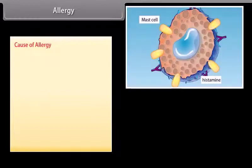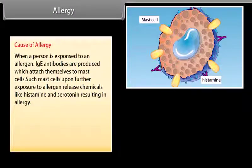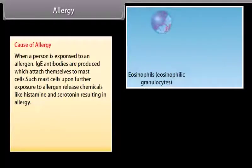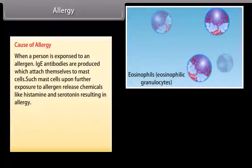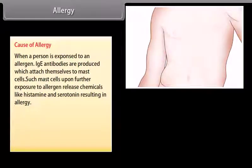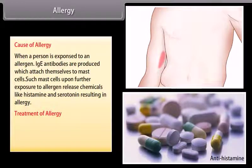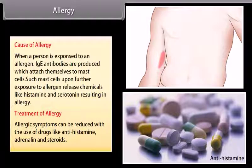Symptoms of allergy include sneezing, watery eyes, running nose, and difficulty in breathing. When a person is exposed to an allergen, IgE antibodies are produced which attach themselves to mast cells. Upon further exposure to the allergen, mast cells release chemicals like histamine and serotonin, resulting in allergy. Allergic symptoms can be reduced with drugs like antihistamines, adrenaline, and steroids.